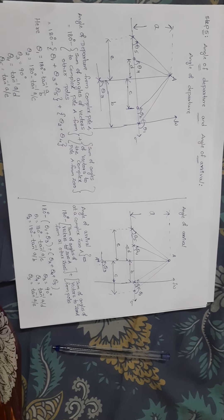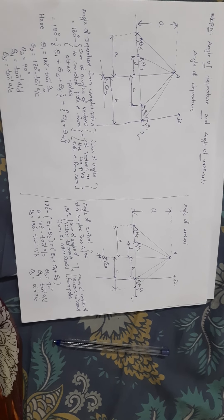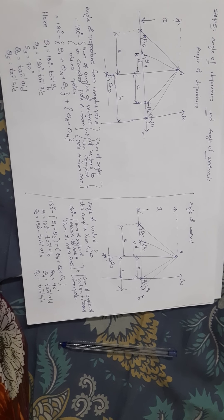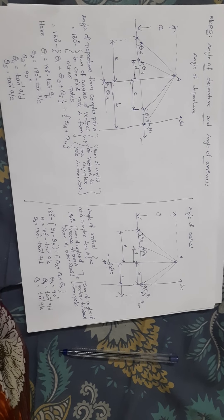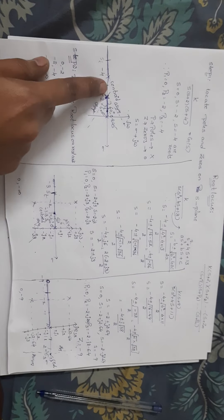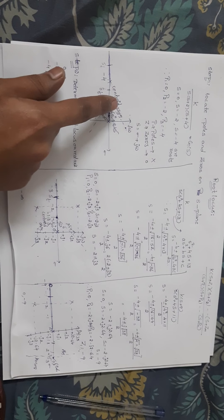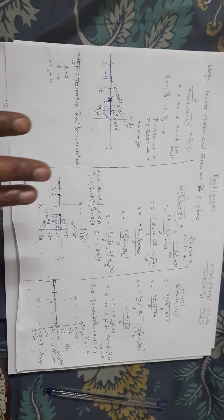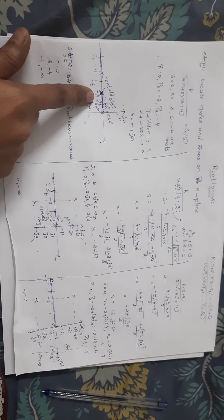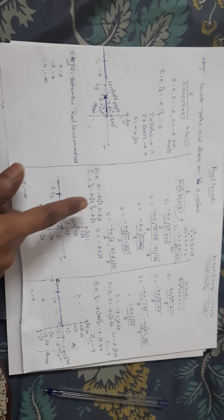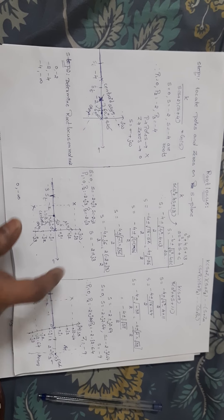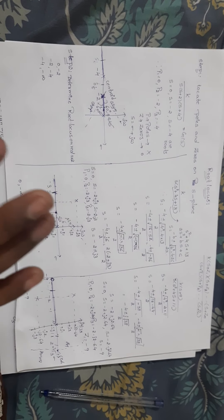Today we are going to discuss step 5, which is angle of departure and angle of arrival. Remember, angle of departure and angle of arrival are done only for complex conjugate poles and zeros. In this first problem, there are no complex conjugate poles or zeros, so we don't have any angle of departure or arrival. But for the second and third problems, we have complex conjugate poles, so we are going to have the angle of departure.